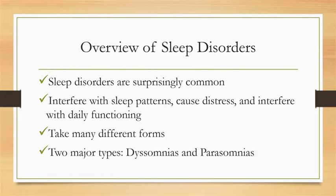Sleep disorders take many different forms. However, they can be grouped into two major types. Dysomnias, which are sleep disorders involving disruptions in the amount, quality, or timing of sleep — insomnia, sleep apnea, and narcolepsy are examples. Also, we'll consider the parasomnias, which are sleep disorders involving undesirable physical arousal, behaviors, or events during sleep or sleep transitions.